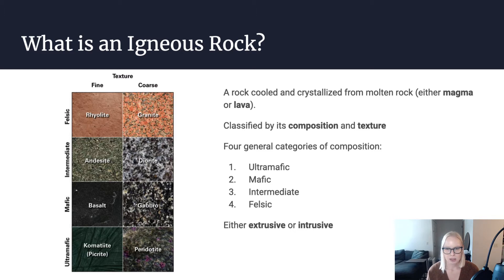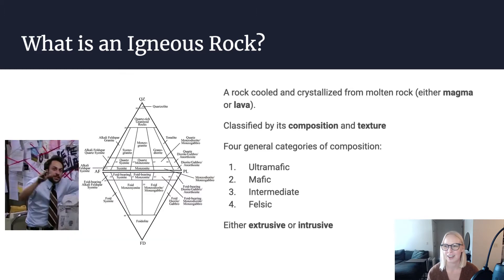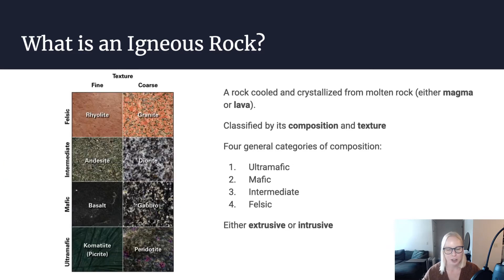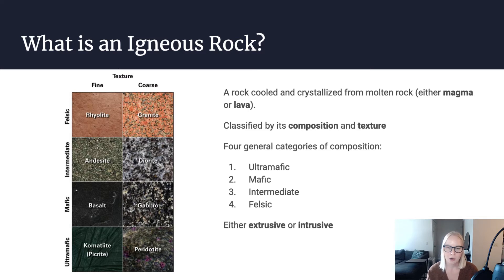We also classify igneous rocks based on their composition. There are four general categories of composition — although an igneous petrologist could go on at length about how many different compositions igneous rocks come in — but we're just going to focus on four main types: ultramafic, mafic, intermediate, and felsic. Igneous rocks are also either extrusive or intrusive — they either extruded out of the earth and are volcanic, erupting at the surface, or they're intrusive and have cooled and crystallized below the surface of the earth.